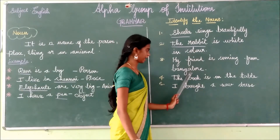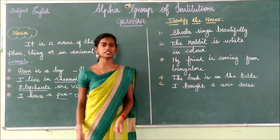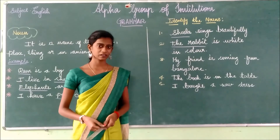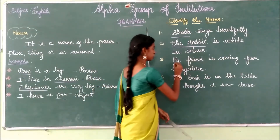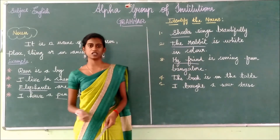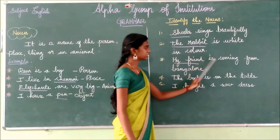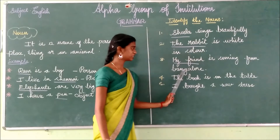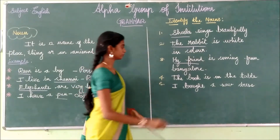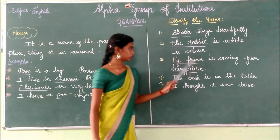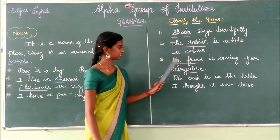Third one: My friend is coming from Bangalore. In this sentence there are two nouns. The first noun is my friend — it may be he or she, a boy or a girl. So my friend is a noun. And what does Bangalore indicate? It is the name of a place. So my friend and Bangalore — these two words are the nouns in the sentence.